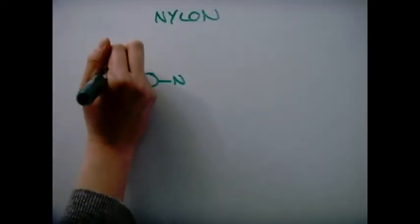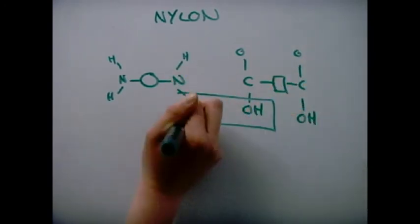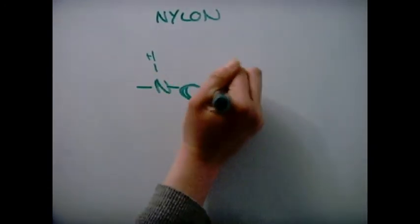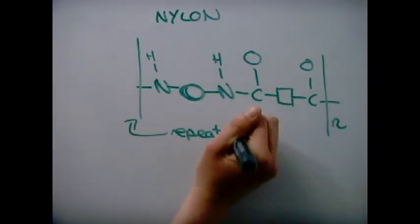For example, nylon is a condensation polymer. It can be made from a diamine and carboxylic acid. They react together forming an amide link and water is also made.